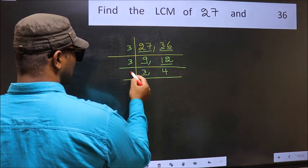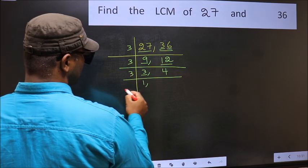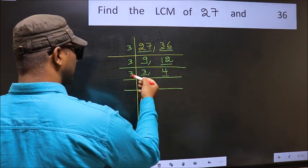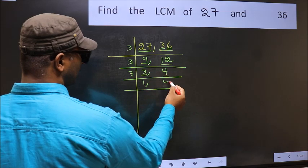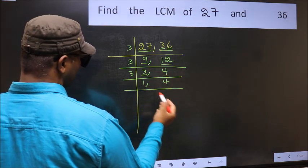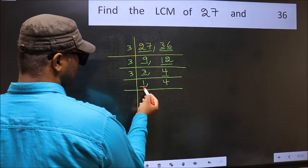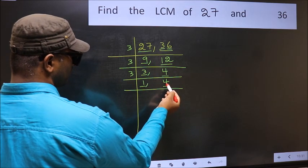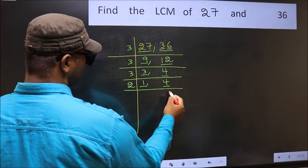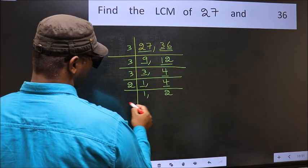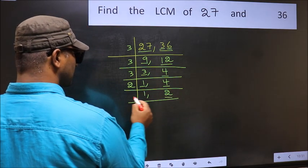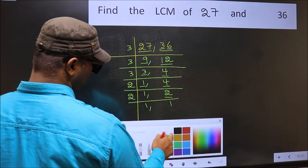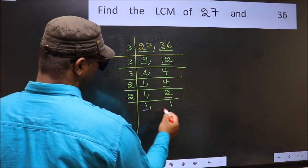Now here we have 3. 3 is a prime number, so 3 ones are 3. The other number, 4, is not divisible by 3, so you write it down as it is. Now we have 2. 2 is a prime number, so 2 ones are 2. We got 1 in both places.